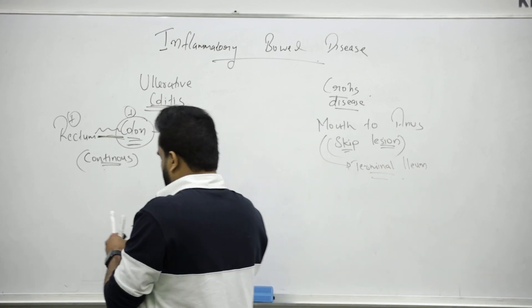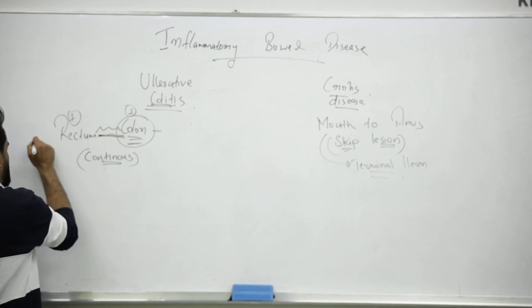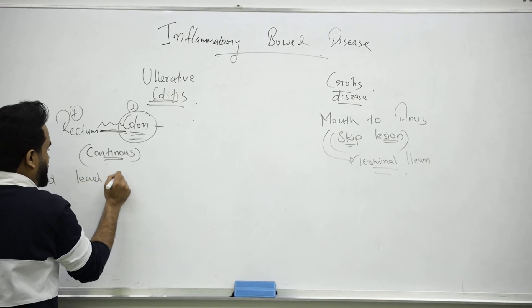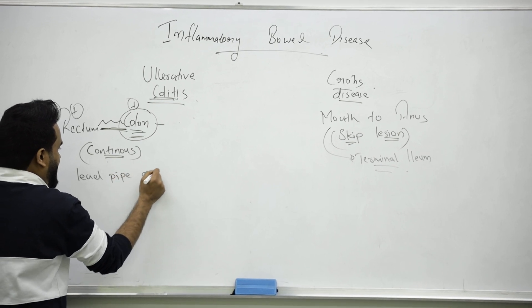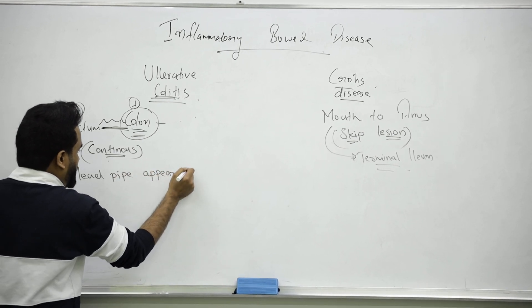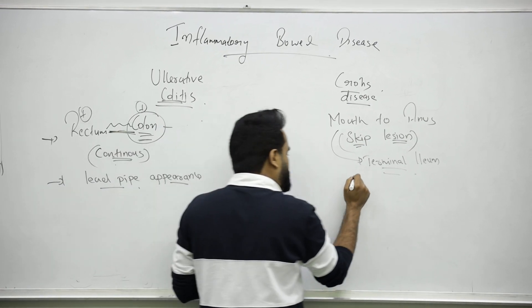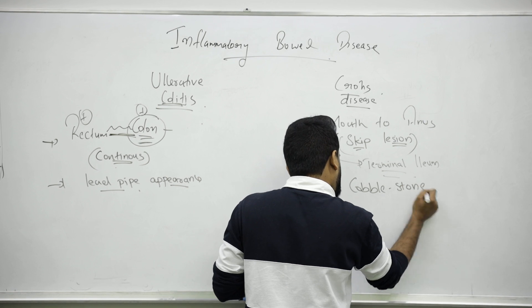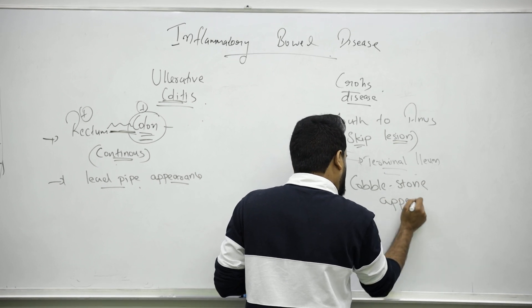In ulcerative colitis, the intestine or colon looks like a lead pipe appearance. But remember, in Crohn's it looks like a cobblestone appearance.